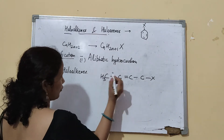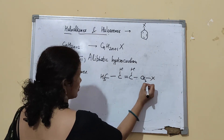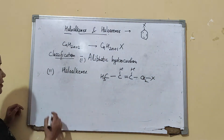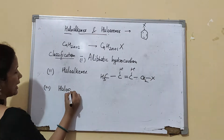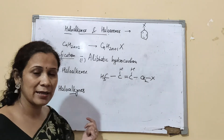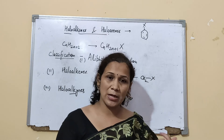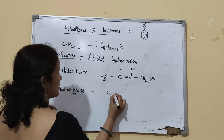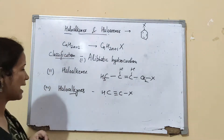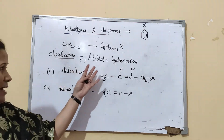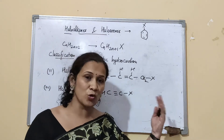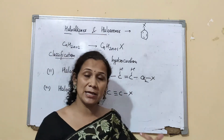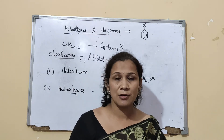For a haloalkyne, you have a halogen attached to a chain that has a triple bond in it. So mainly three types of aliphatic haloalkanes: depending on the number of halogens — monohalogen, dihalogen, polyhalogen; dihalogen can again be vicinal or geminal; then haloalkenes (double bond) and haloalkynes (triple bond).